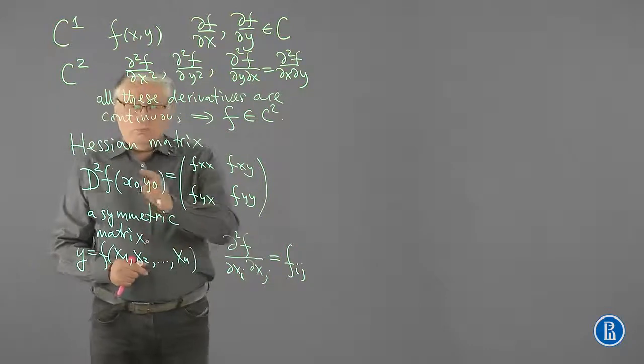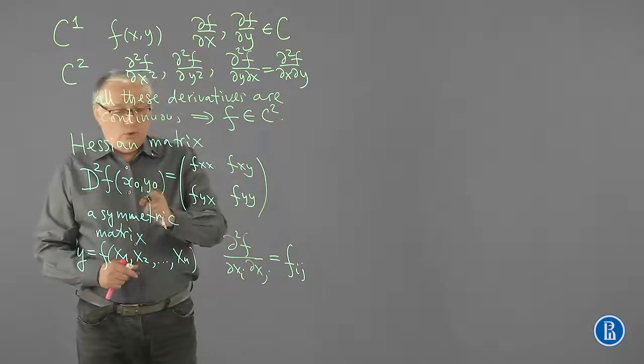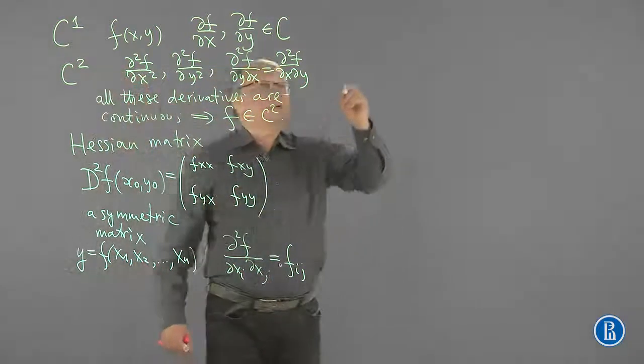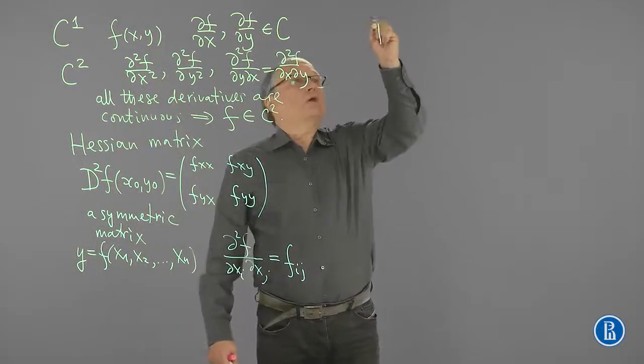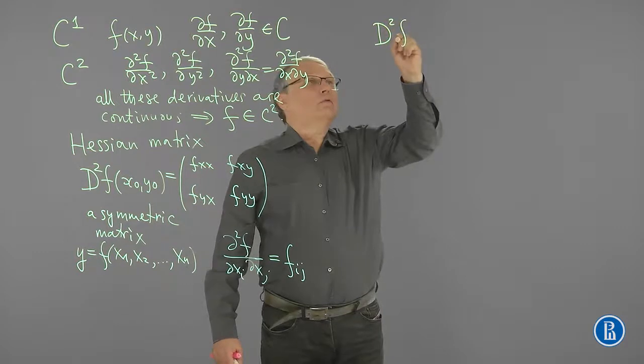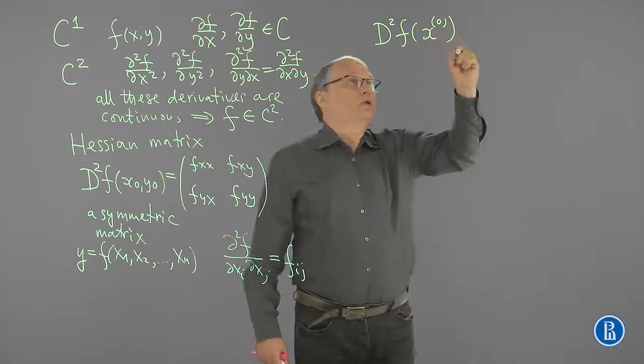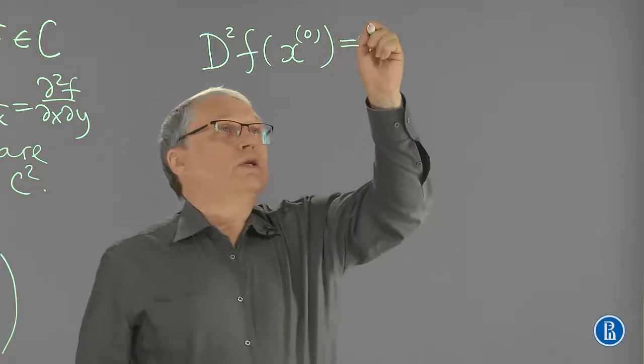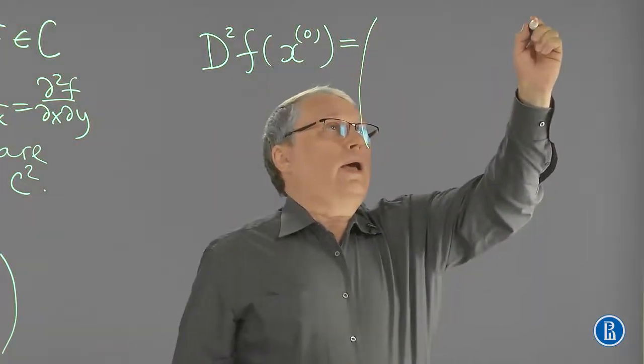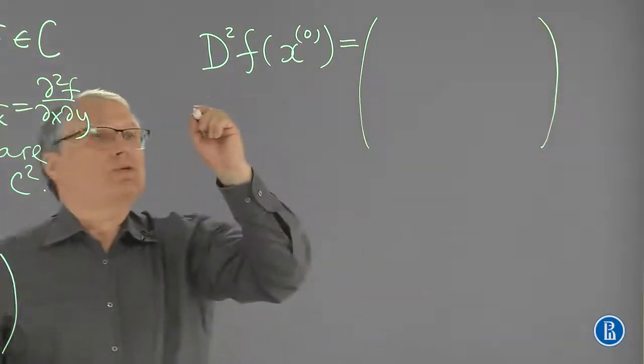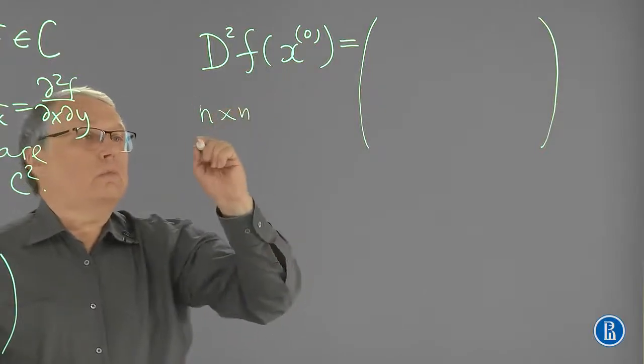Now, Hessian matrix can be also introduced in n-dimensional case. This time we write d squared f. We indicate the point where derivatives are calculated and we get an n by n matrix.